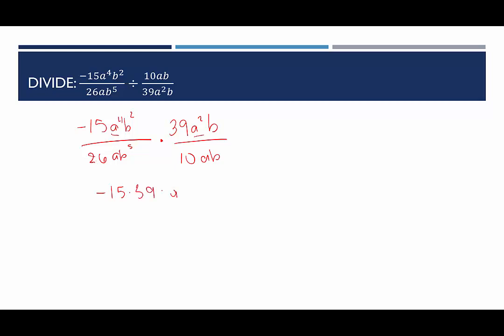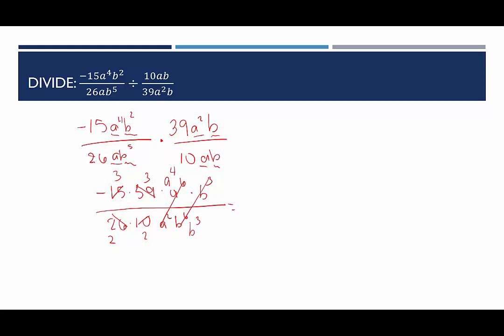I have 4 factors of a and 2 more, giving a to the sixth, and 2 factors of b and 1 more, giving b cubed in the numerator. In the denominator, I'll leave 26 and 10 separated: a and a gives a squared, and b to the fifth and b gives b to the sixth. Now simplifying: 15 and 10 have a common factor of 5, giving 3 and 2. 39 and 26 have a common factor of 13, giving 3 and 2. For the a's: 6 factors in the numerator and 2 in the denominator leaves 4 factors of a in the numerator. For the b's: 3 in the numerator and 6 in the denominator leaves 3 factors of b in the denominator. Multiplying straight across: negative 3 times 3 times a to the fourth gives negative 9a to the fourth in the numerator, and 2 times 2 times b cubed gives 4b cubed in the denominator.